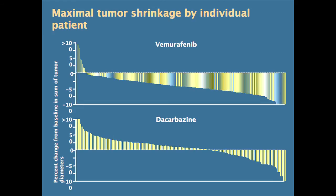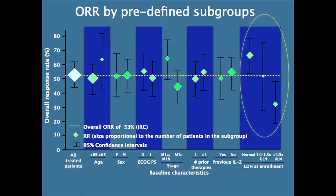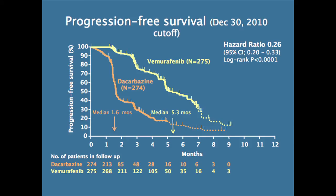Here are waterfall plots of benefit — you can see how many people out of the population actually benefited. In DTIC, all these people had no benefit, whereas in vemurafenib these did have benefit. Quite dramatic difference in those two plots. All groups benefited. The progression-free survival is very, very significant. In the standard treatment arm, the progression-free survival was 1.6 months. In the vemurafenib arm, it was 5.3 months. Vemurafenib substantially prolonged the disease-free interval in these patients.